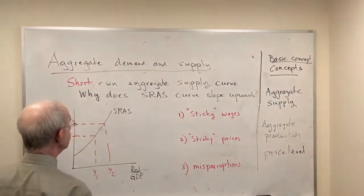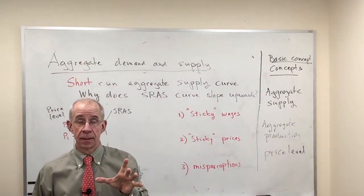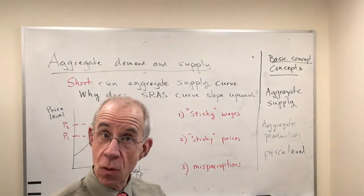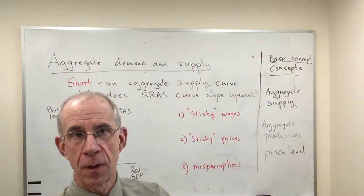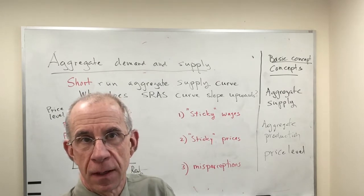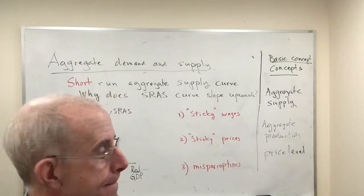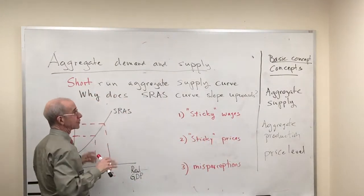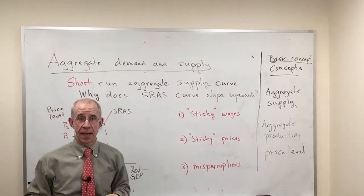But there can be changes in what is supplied in the economy in the short run if there are aggregate price changes—inflation or deflation. And we use the short-run aggregate supply curve to do that analysis.